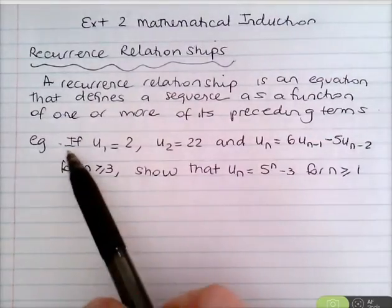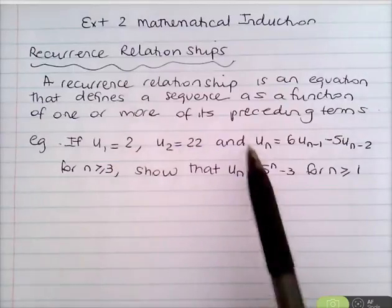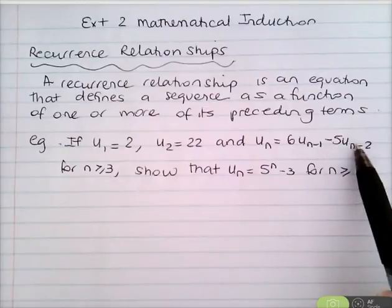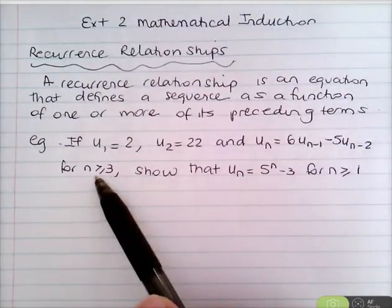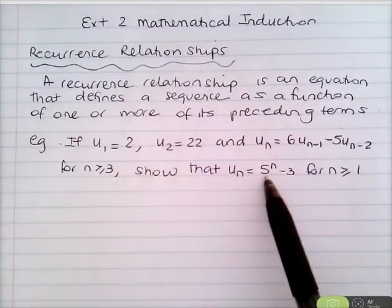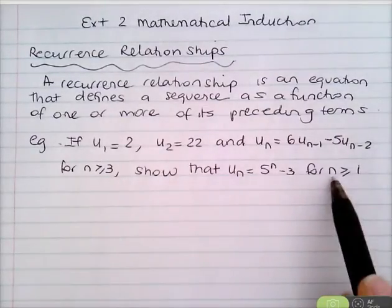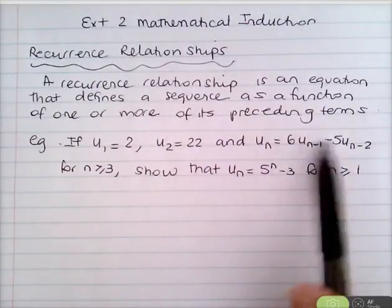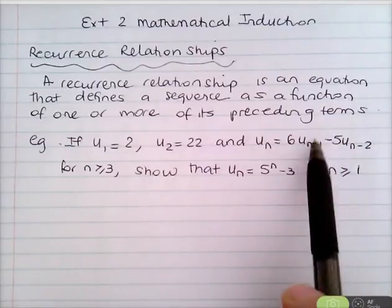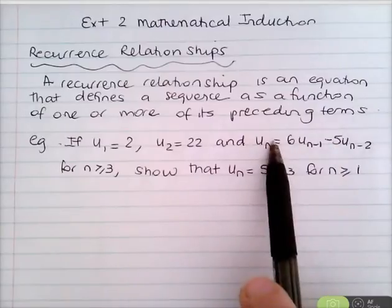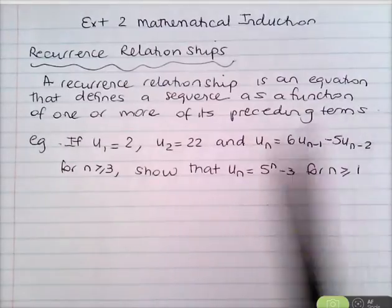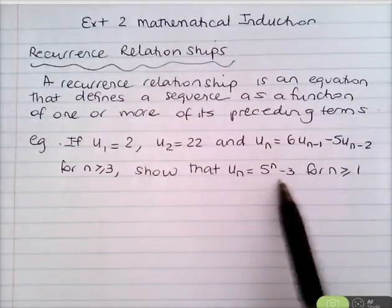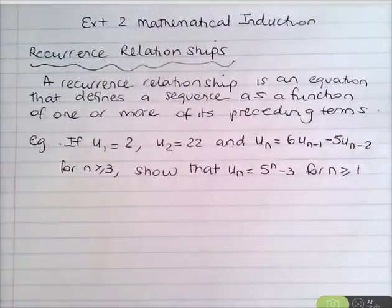We'll start with an example. If u₁ = 2, u₂ = 22, and u_n = 6u_{n-1} − 5u_{n-2} for n ≥ 3, show that u_n = 5^n − 3 for n ≥ 1.